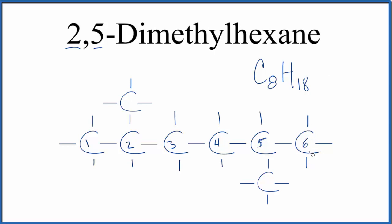Note that if you started numbering one, two, three, four, five, six, you'd still have 2,5-dimethylhexane.